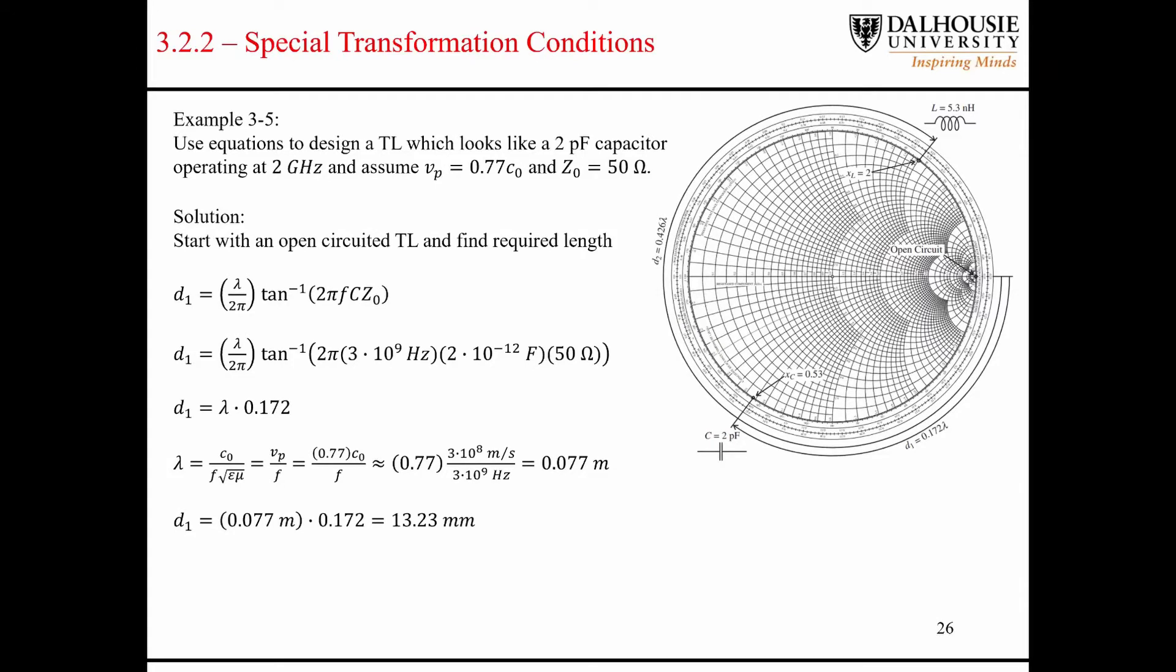So example 3.5 looks at a situation where we're trying to make a transmission line look like a 2 picofarad capacitor. And we have our design constraints here, the operating frequency, the phase velocity, and our characteristic impedance of our system here.